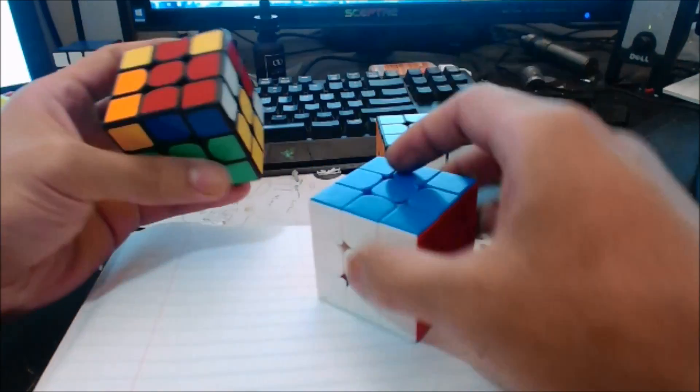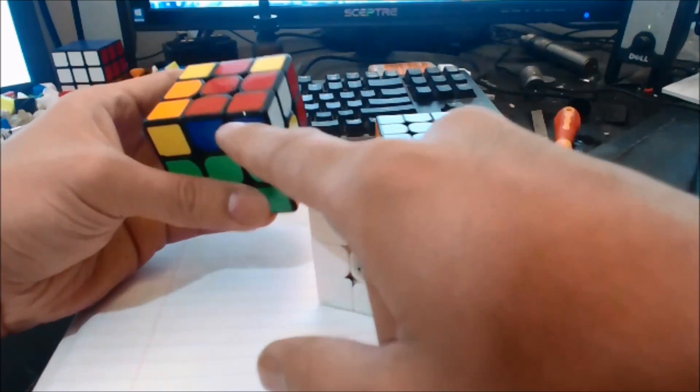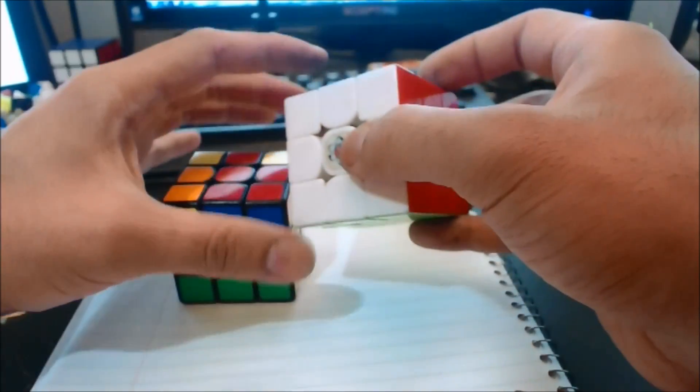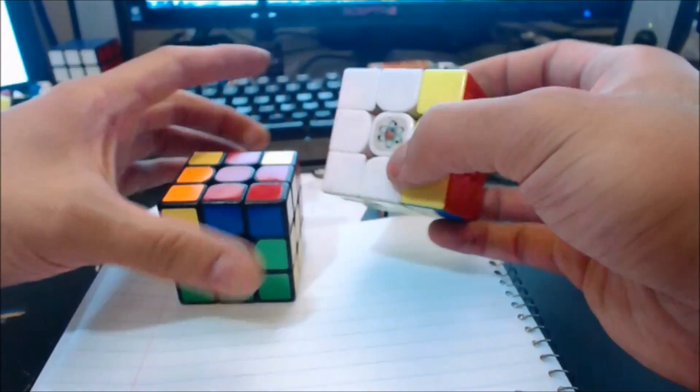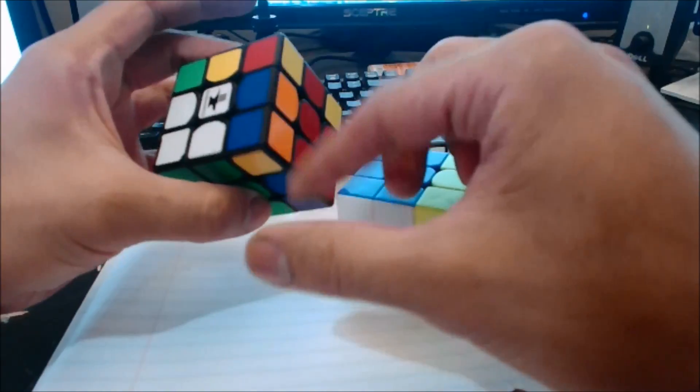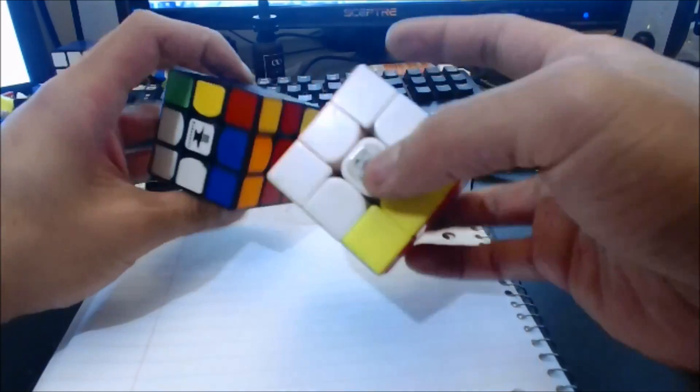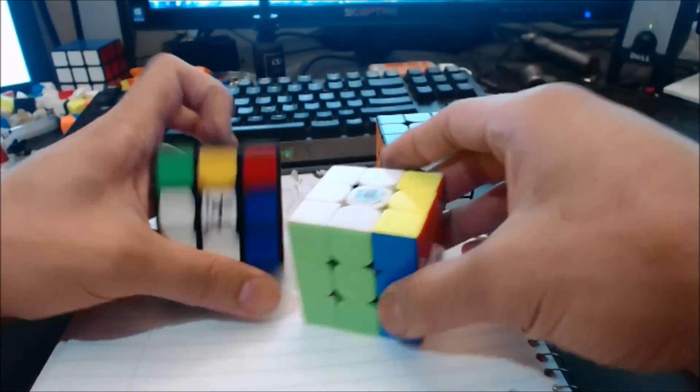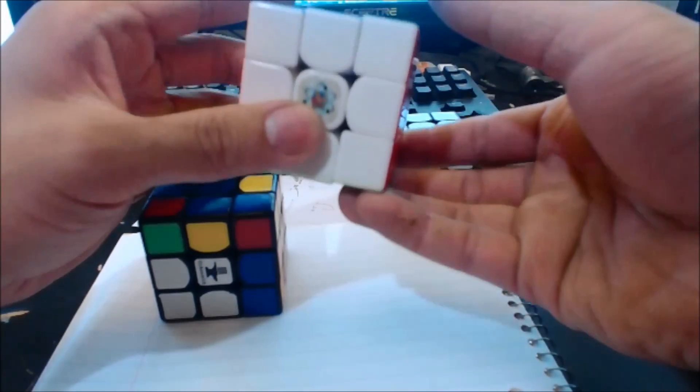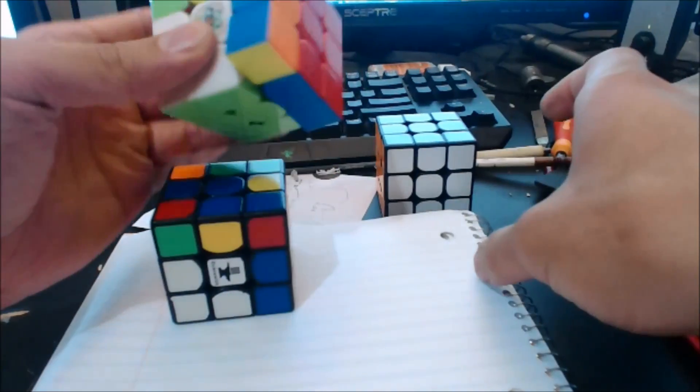The way I see it is I do this one first, so red blue blue white—that's just R2. And then this block is here, so I want to get that there. That's a cancellation right there, so it turns into R prime U2 R prime.